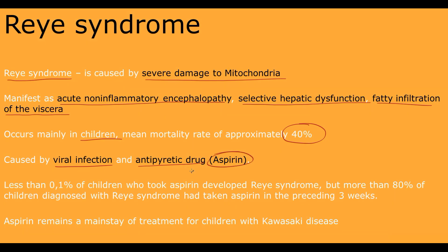Less than 0.1% of children who took aspirin developed Reye syndrome, but more than 80% of children diagnosed with Reye syndrome had taken aspirin in the preceding three weeks. Aspirin remains a mainstay of treatment for children with Kawasaki disease.